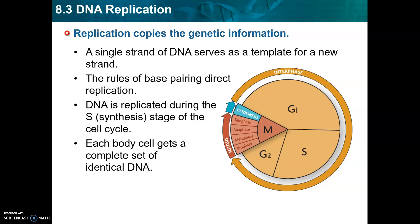G1 and G2 are checkpoints. These are the stages in which a cell makes sure that all of its components are working correctly. It prepares to replicate or prepares to grow, but it's like a checkpoint.